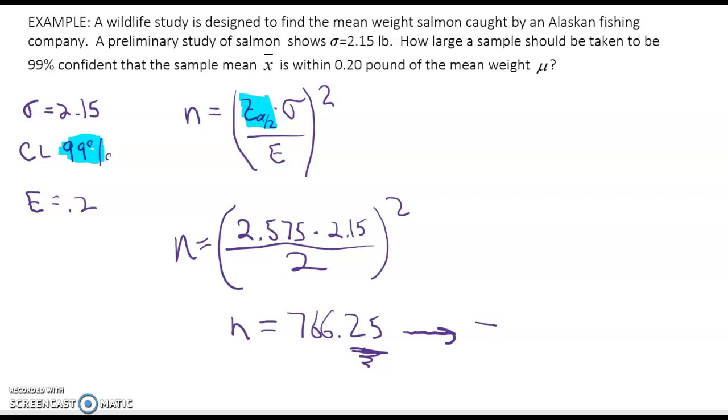Now even though this is less than 0.5 on our decimal part we're always going to round up because if we just use the sample size of 766 it wouldn't be enough. You need that 0.25 at least more. So we're going to say n is 767.